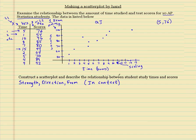This is how the question would be written. We've already done the first part, we've already did the scatterplot. Now we just need to describe the relationship between student study times and scores.